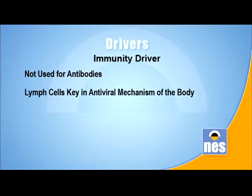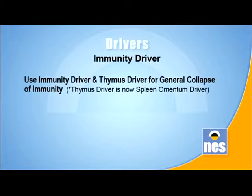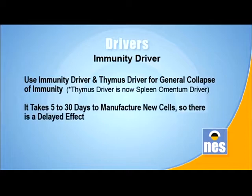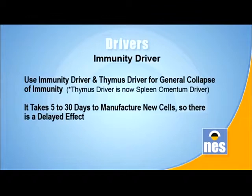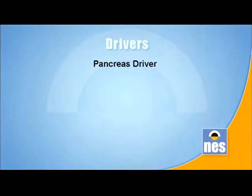This driver is not used for antibodies or formation of antibodies - for that we need to use thymus driver, which is long-term immunity provision. It is more about the immune system that grabs hold of foreign material and eats it up. Cell driver and immunity driver should always be used together - this is one of my favourite rules. It is quite in order to use immunity driver together with thymus driver if there is a general collapse of immunity. Please bear in mind the length of time it takes to make a new blood cell - between five days and 29 or 30 days. But you can still get quite a strong initial reaction. I like to use immunity driver for colds and flus.